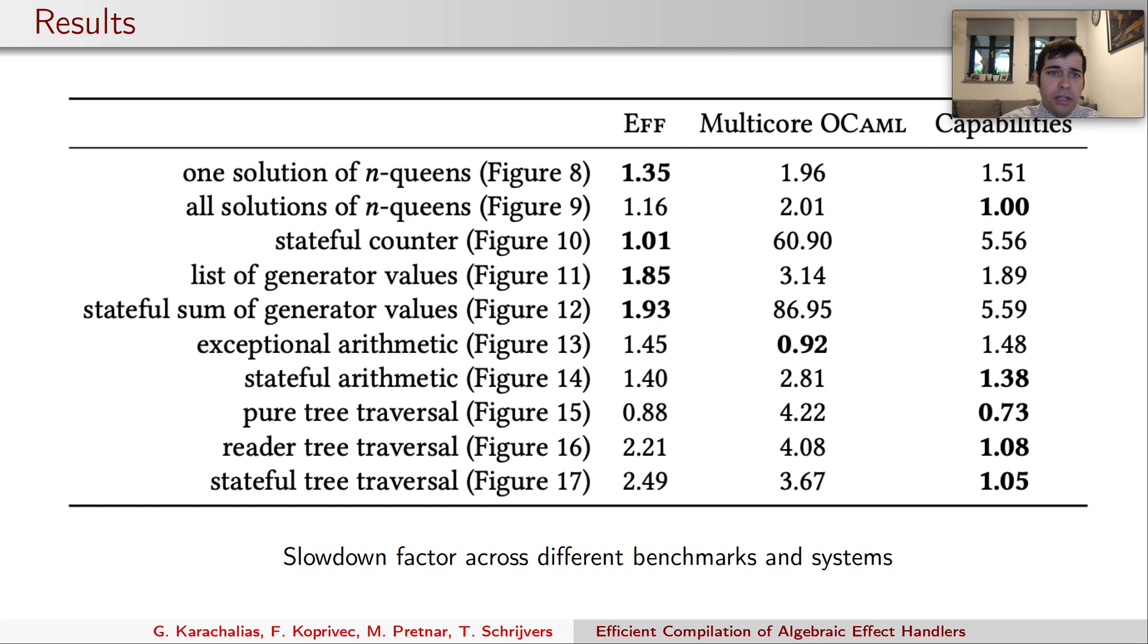And this table shows the full benchmarking result. The numbers presented again are a slowdown factor compared to the pure native OCaml implementation. We can see that our F compiler is consistently much faster than multi-core OCaml and competitive with capability passing style compilation and sometimes even outperforming native code due to the function specialization handler inlining and also continuation passing style.